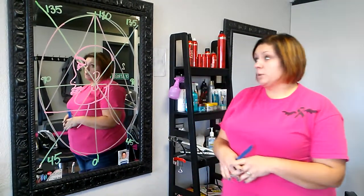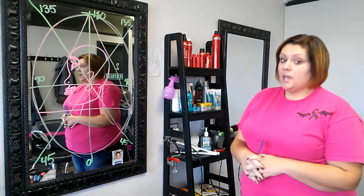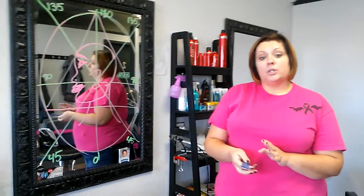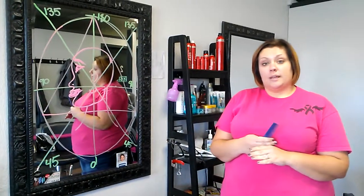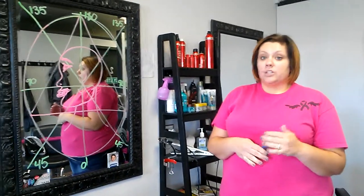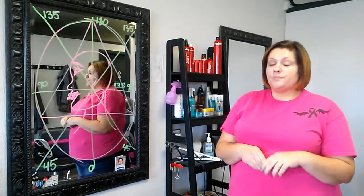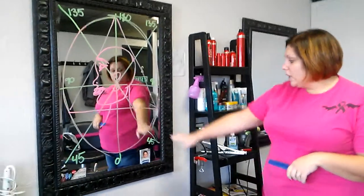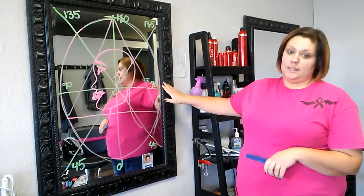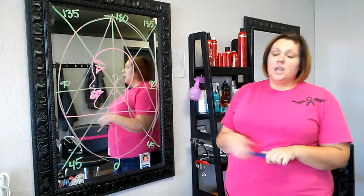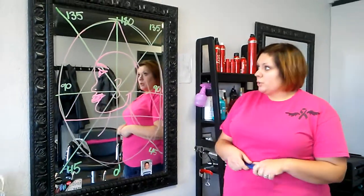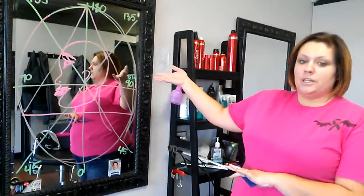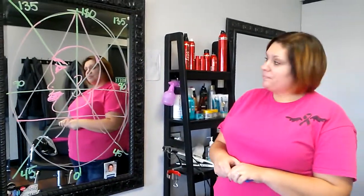Structure of motion is based on angles and elevation. In order to understand haircutting, you have to understand angles and elevation and how they affect your end result. The two most common angles in haircutting are 45 degrees and 90 degrees. The structure of motion SimCore tool, pictured here, can help us grasp that.